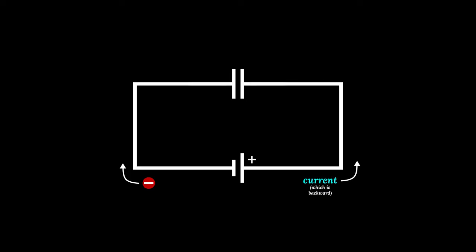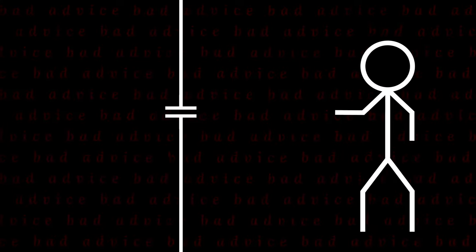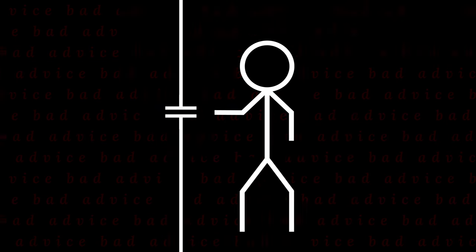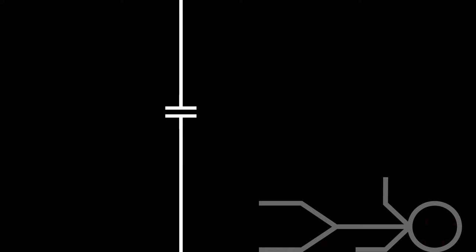Hook a capacitor to a battery. You force all the electrons to one side of the bridge, charging the capacitor. Congratulations, you've caused a major traffic jam. Remove the battery and close the circuit. All the electrons move freely again, discharging the capacitor. You can close the circuit on a charged capacitor by touching the exposed wires with your bare hands, which can kill you. So don't do that.